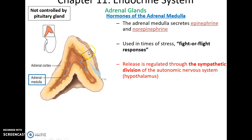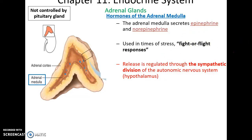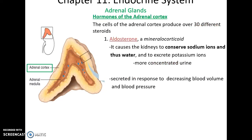The adrenal glands are essentially two different glands in the same place: the adrenal cortex and the adrenal medulla. The adrenal medulla secretes epinephrine and norepinephrine, commonly known as adrenaline, often released during stress to generate a fight-or-flight response by stimulating the sympathetic division of the autonomic nervous system. The adrenal cortex produces many steroid hormones. One example is aldosterone, a mineralocorticoid, which causes the kidneys to conserve sodium ions — thereby conserving water — and to excrete potassium ions, making urine more concentrated. This is secreted when blood volume or blood pressure gets low.